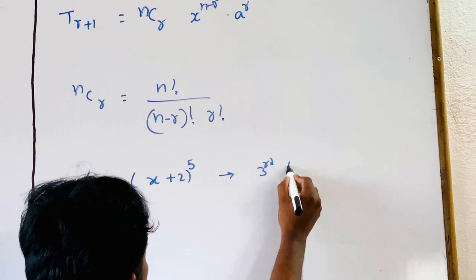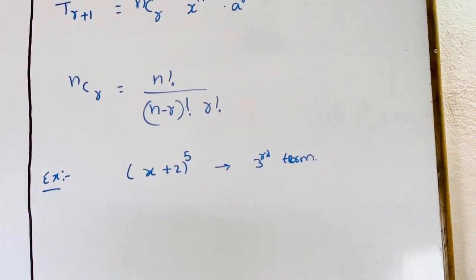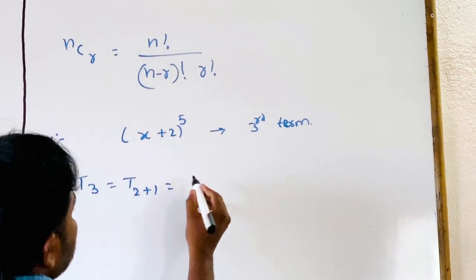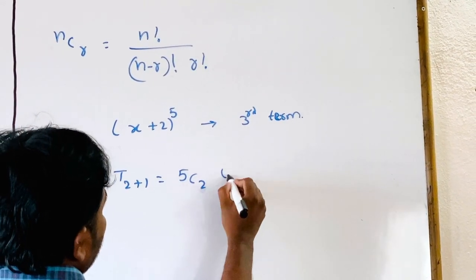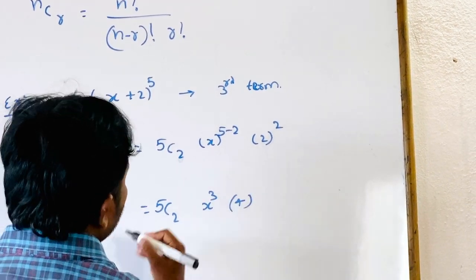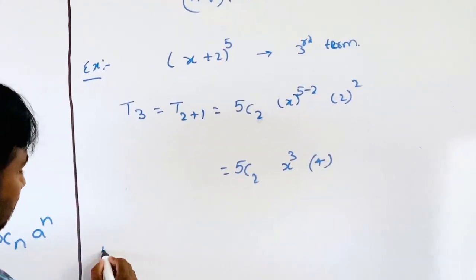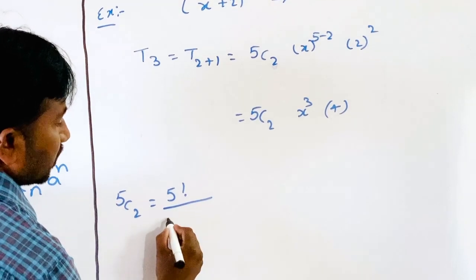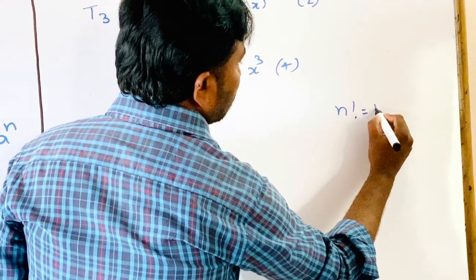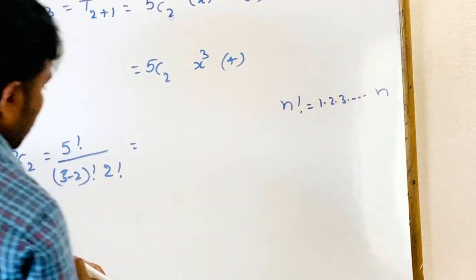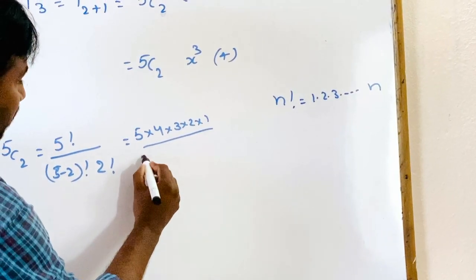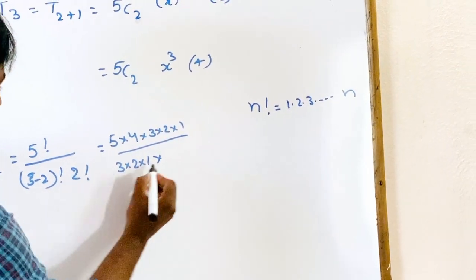How do you find the third term? Here, T3 means T(2+1). Apply the formula: nCr means 5C2. So 5C2 into x power (5−2) into 2y power 2 means 5C2 into x cube into 4. Now, 5C2 is equal to 5 factorial by (5−2) factorial into 2 factorial, which is 5 factorial by 3 factorial into 2 factorial. That gives 5 into 4 divided by 2 into 1, which equals 10.